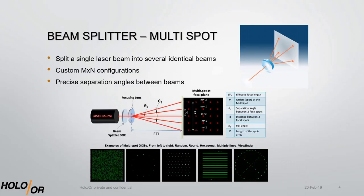One of HoloOr's most popular lines of DOE is the beam splitter, or multi-spot DOE. The multi-spot DOE splits a single laser beam into several beams that are identical in profile. The beam can be split into any one- or two-dimensional array, which is defined by a precise separation angle between the beams.